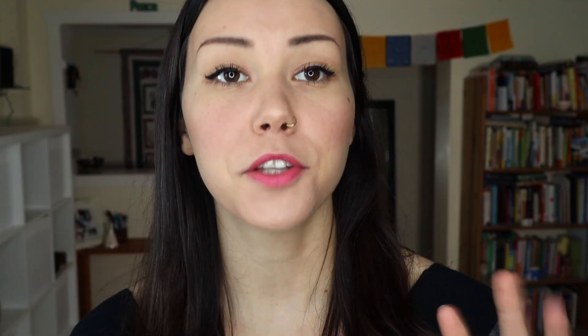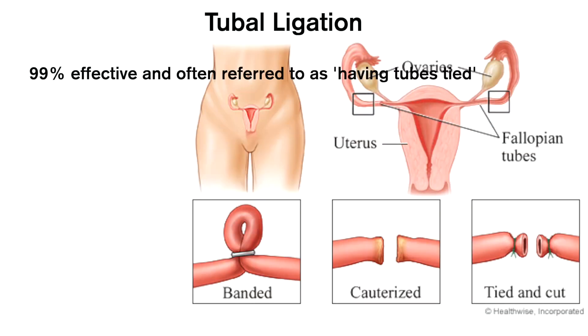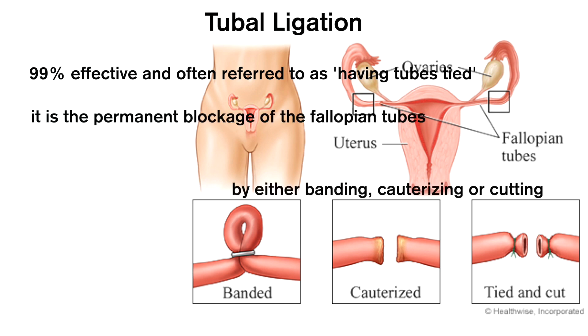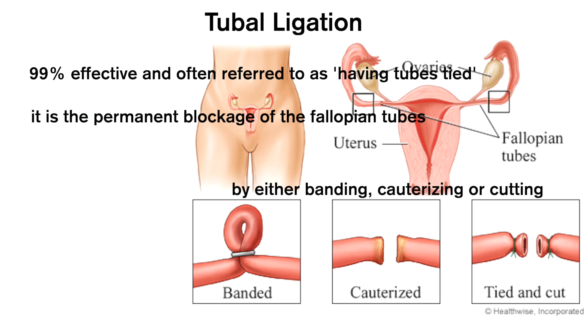The last form of non-hormonal birth control is permanent methods like tubal ligation and vasectomy. Tubal ligation is when you have your tubes tied — it is a permanent blockage of your fallopian tubes so that eggs can no longer pass into your uterus. It requires keyhole surgery under general anesthetic and is highly effective long-term contraception. If you do not want children or are done having children, it's a great option. It can be reversed, but often that is unsuccessful, so if you're not 100% sure, this probably isn't the right method for you.